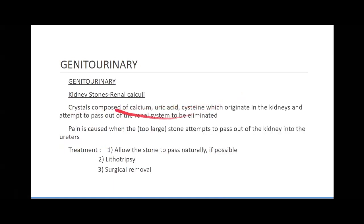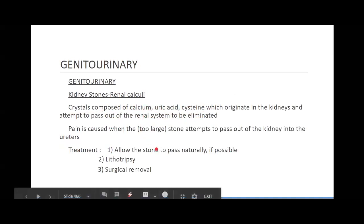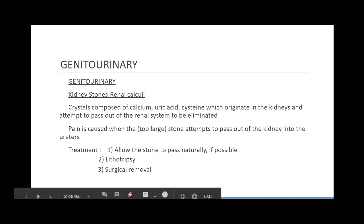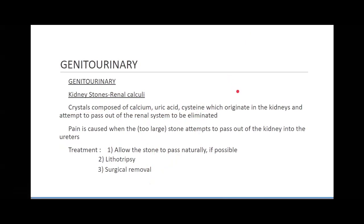Kidney stones, also known as renal calculi, are crystals composed of calcium, uric acid, and cysteine. Calcium is a hardening substance. Most of these stones will be able to pass naturally — and by naturally, I mean painfully. Who's at biggest risk for kidney stones? Anyone living in the Southwest or in the southern states — there's a whole band called the kidney stone belt. It has to do with mineral deposits in the water, which can build up over time if we're drinking a lot of unfiltered tap water.